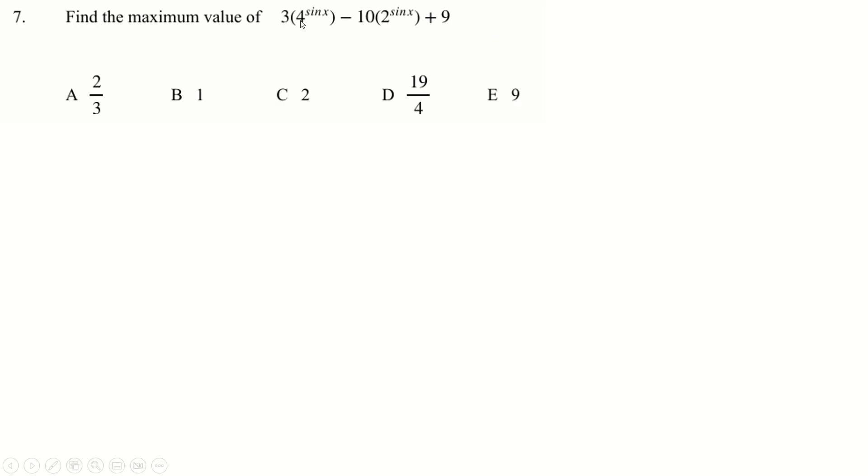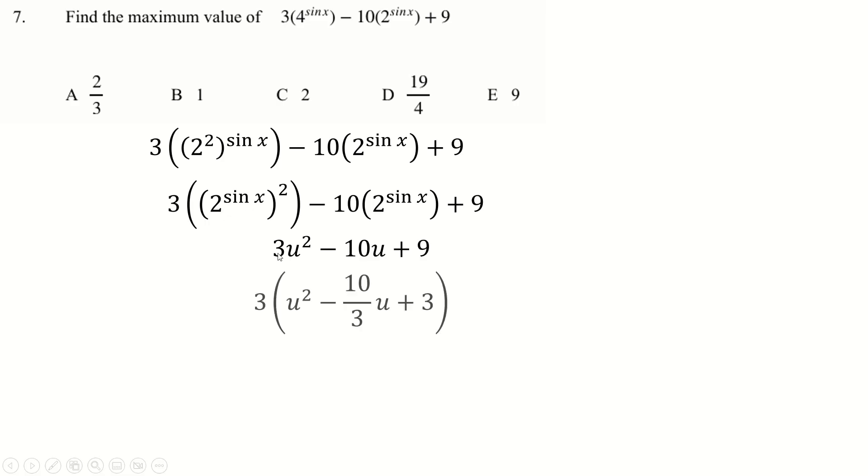Good tricks here. Four is two squared. And because these two things would multiply with brackets, you can just swap them over. You can make a substitution now, maybe u equals 2 to the sin x, and you end up with this quadratic. Finding the max value shouldn't be too bad, although we have some restrictions based on the 2 to the sin x. I decided to complete the square here, though I could have differentiated it. But completing the square is always good practice. Factor out the three, halve that number here, take away the square of it, combine these together.